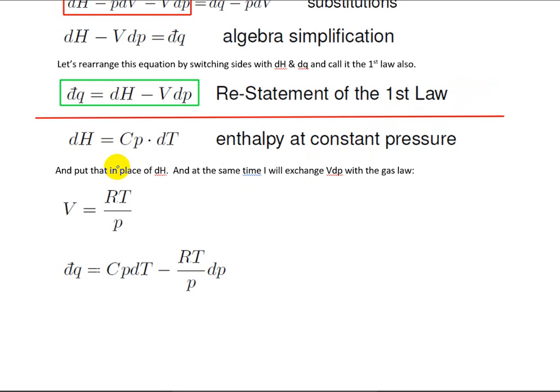All right, now we're going to pick up that enthalpy term at constant pressure. And notice that that dH is the same as that dH. So we're going to substitute in the Cp dT in place of that. And you can see down here I've got dq is equal to, instead of dH, I've got Cp dT.